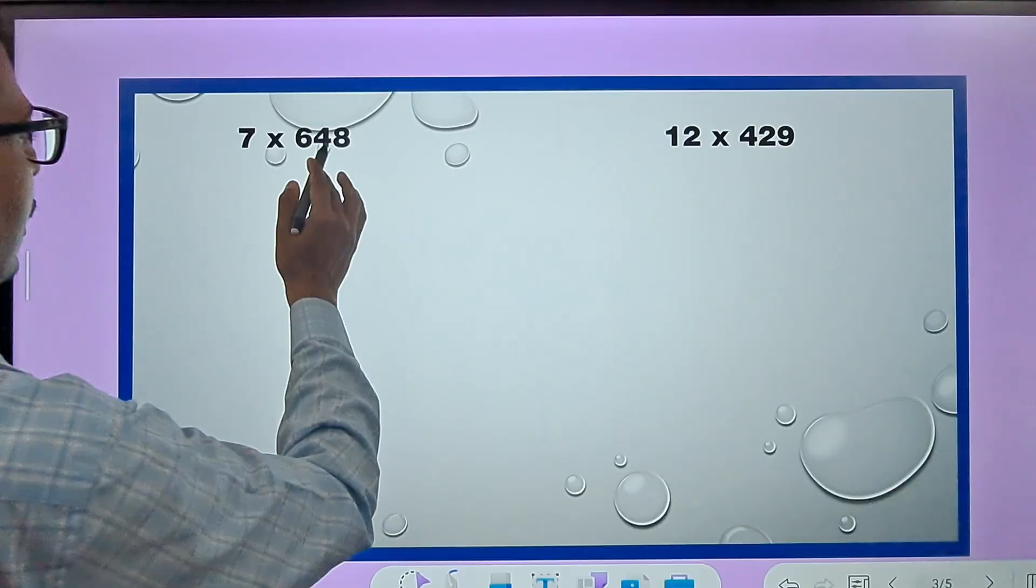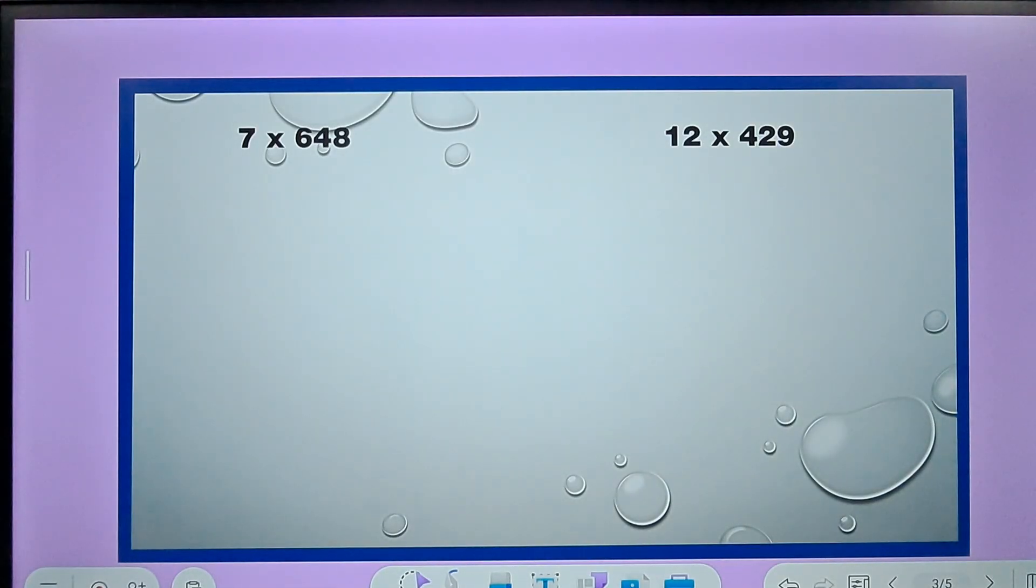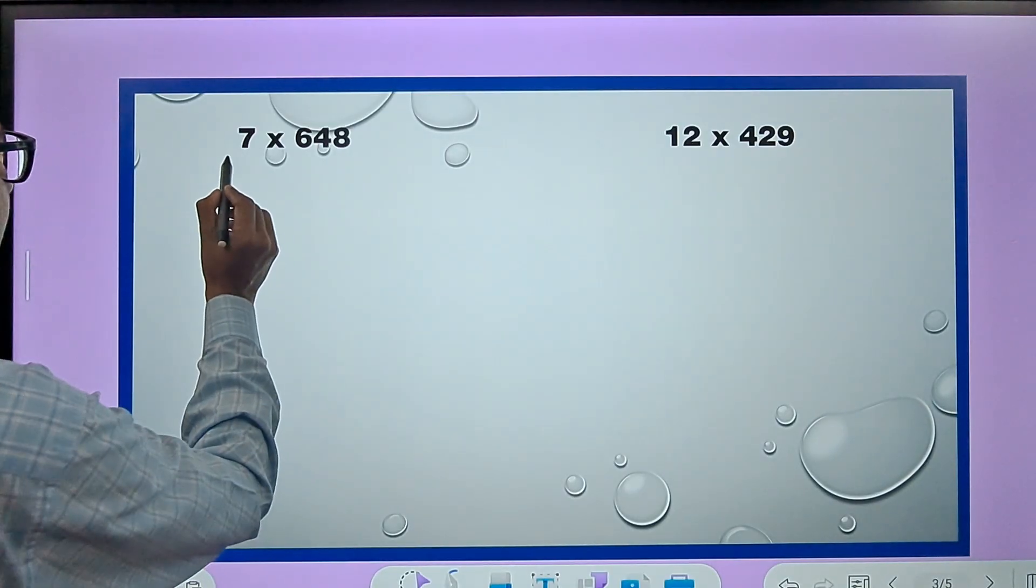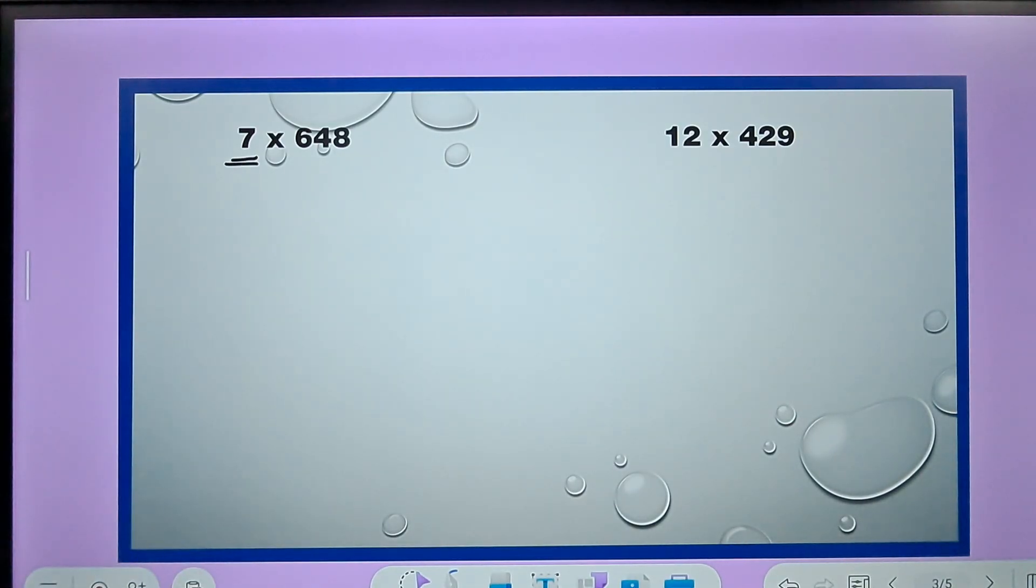So here we have 7 times 648. Students write the numbers one below the other and then do vertical addition to get the answer. If they are good in tables, then the partial product method works wonders. Here, 7 times table is what is required.